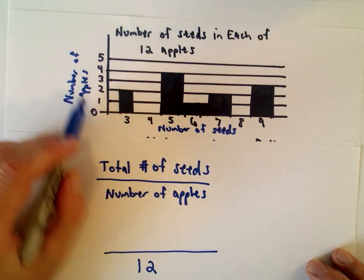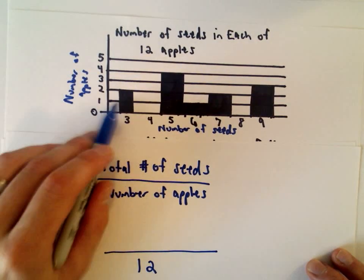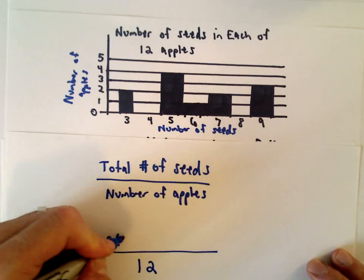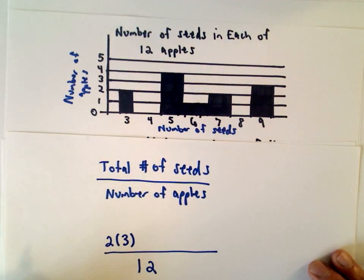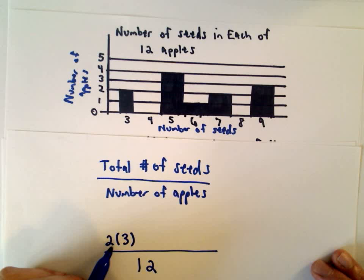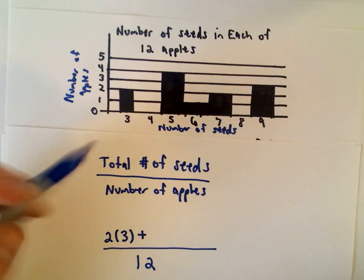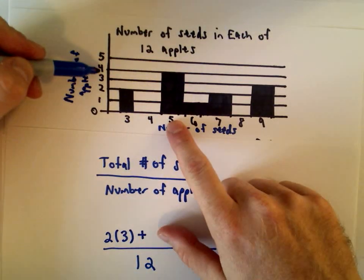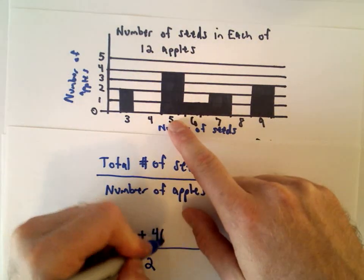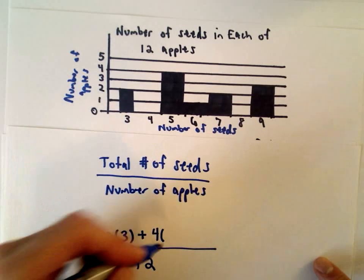From our first little bar here, we've got two apples and those have three seeds each. So two times three is going to give us six seeds. That's going to be our arithmetic here. We're going to add to that.